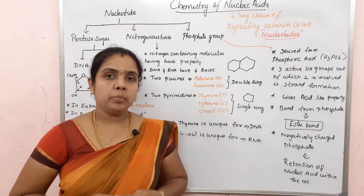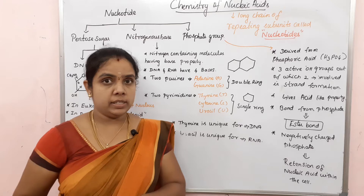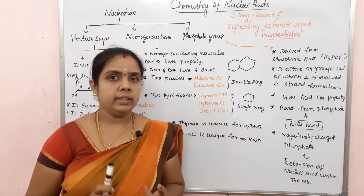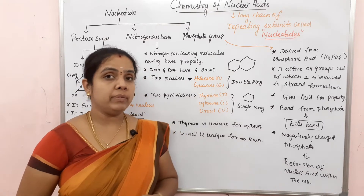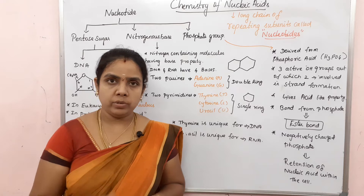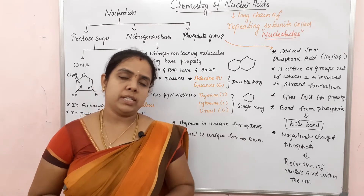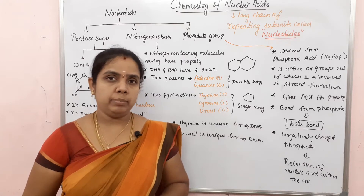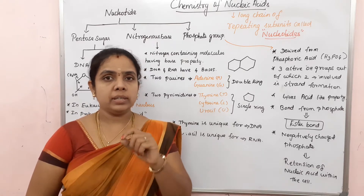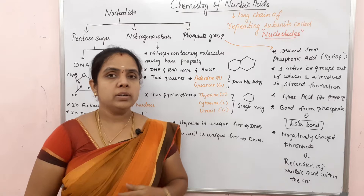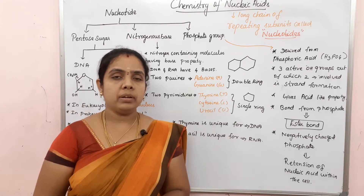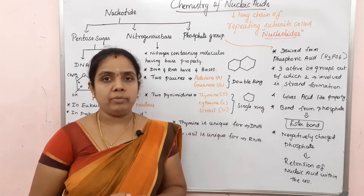Hi students, welcome to our channel. This is Molecular Genetics Lesson Number Four. We have a transformation experiment, and then we have to look at the Hershey and Chase experiment to confirm DNA is genetic material. Once we confirm the genetic material, we look at what chemicals could be involved - the chemical nature of DNA.